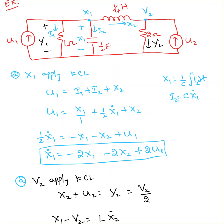Here is another example where we are asked to find the state equation and output equation. There are two inputs: u1 which is a current, and u2 which is another current. There are also two outputs: y1 is the voltage across a 1 ohm resistor, and y2 is the current passing through the 2 ohm resistor. So in this circuit we have two inputs and two outputs.